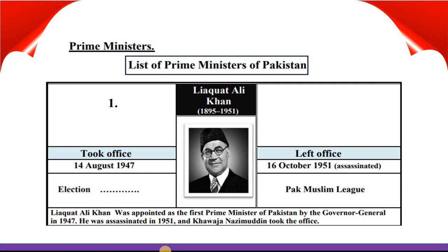The first Prime Minister of Pakistan was Liaquat Ali Khan. He took office 14th August 1947 and left office 16th October 1951. He was elected by elections and belongs to Pakistan Muslim League. He was appointed as the first Prime Minister by the Governor General in 1947 and was assassinated in 1951, after which Khawaja Nizamuddin took office.